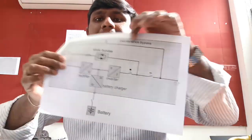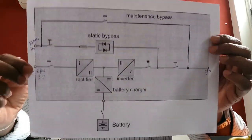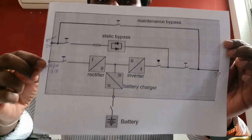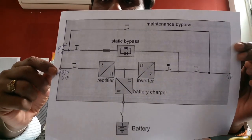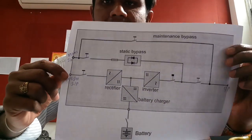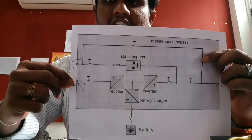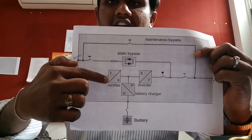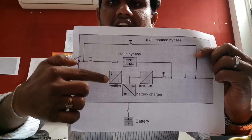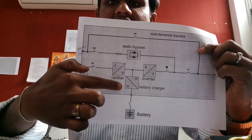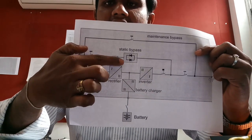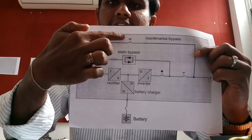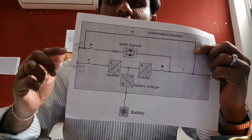Let's look at the circuit diagram. Looking at the input, the major parts are: the Rectifier, the Inverter, the Battery Charger, the Battery, the Static Switch, the Maintenance Bypass, and the Output.